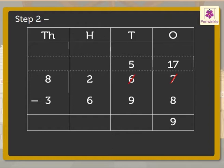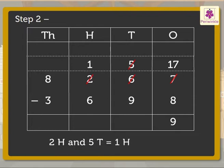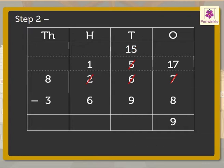Step 2: Subtract the digits in the tens column. Here, as the tens are not enough, we regroup the hundreds. That is, 2 hundreds and 5 tens is equal to 1 hundred and 15 tens. Therefore, 15 minus 9 is equal to 6 tens.